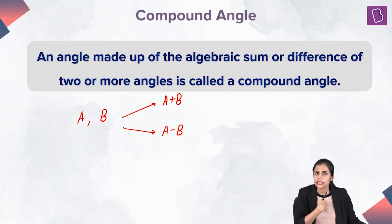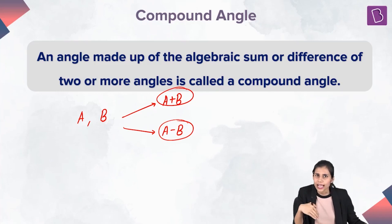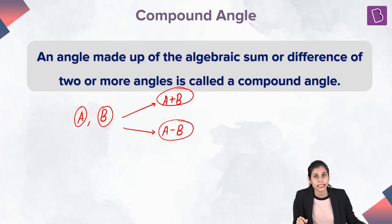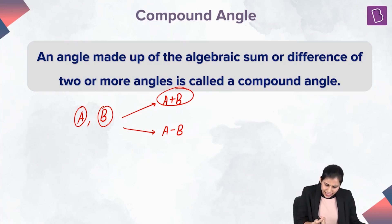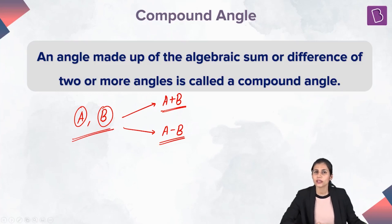Our agenda is to find out the trigonometric ratios of these compound angles, and because these compound angles are formed with the help of these individual angles, the natural curiosity arises: is there any relationship between the trigonometric ratios of these compound angles and the trigonometric ratios of these individual angles? If yes, what is it? Let's find out.